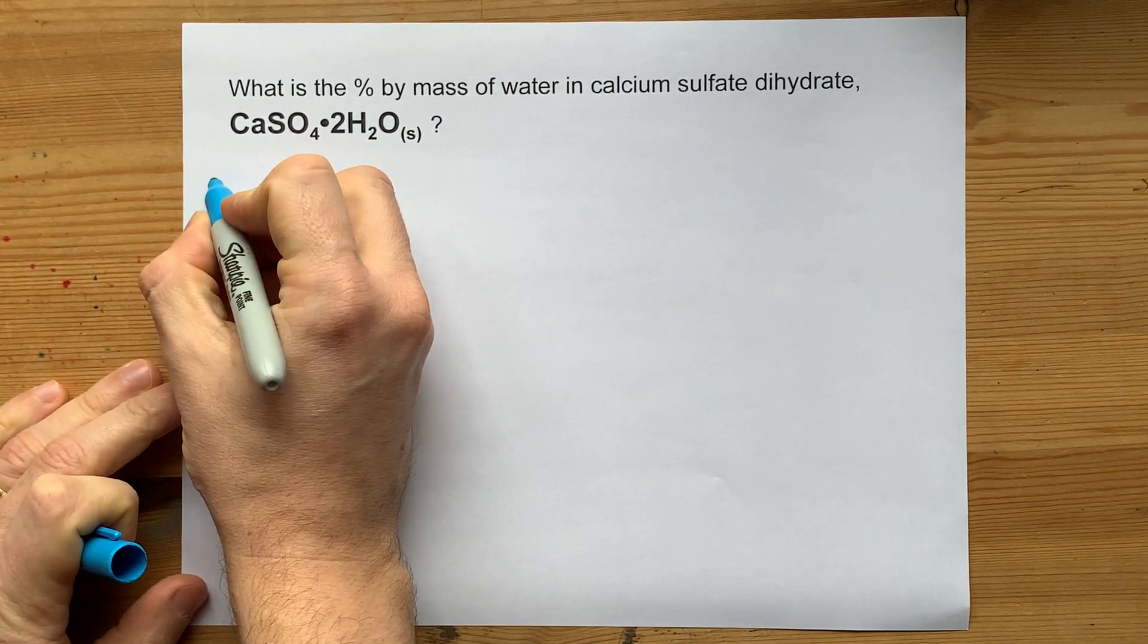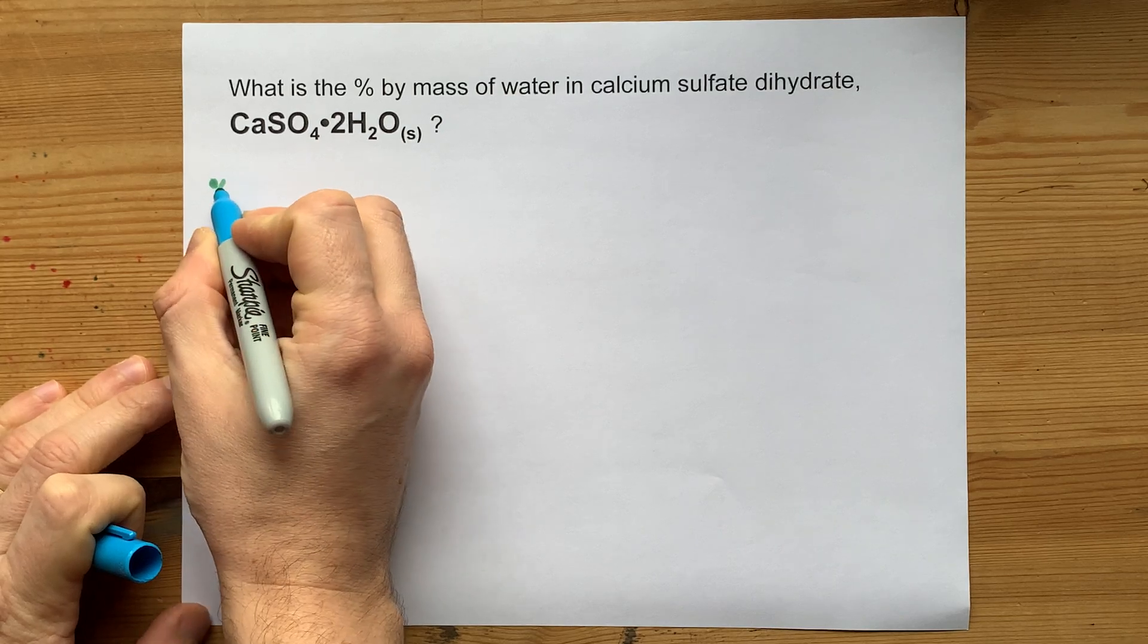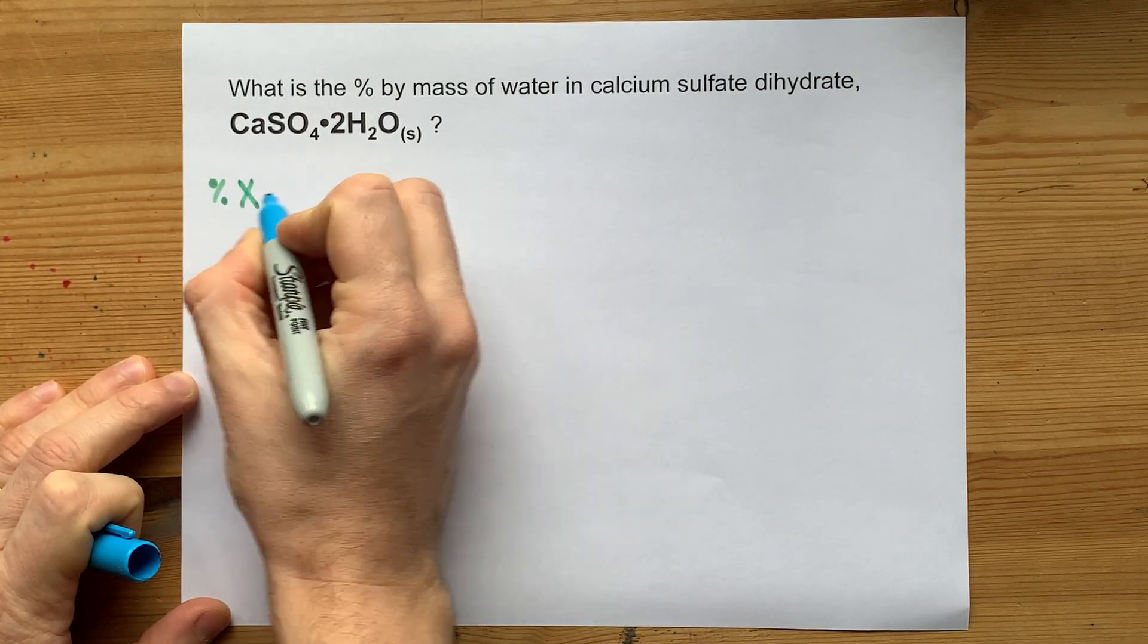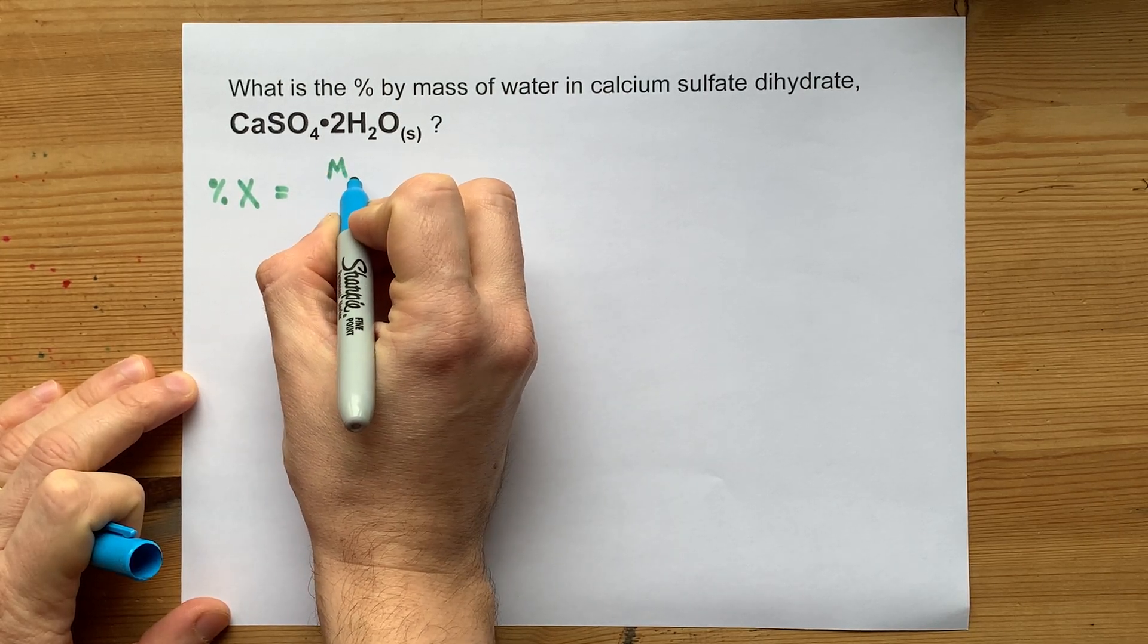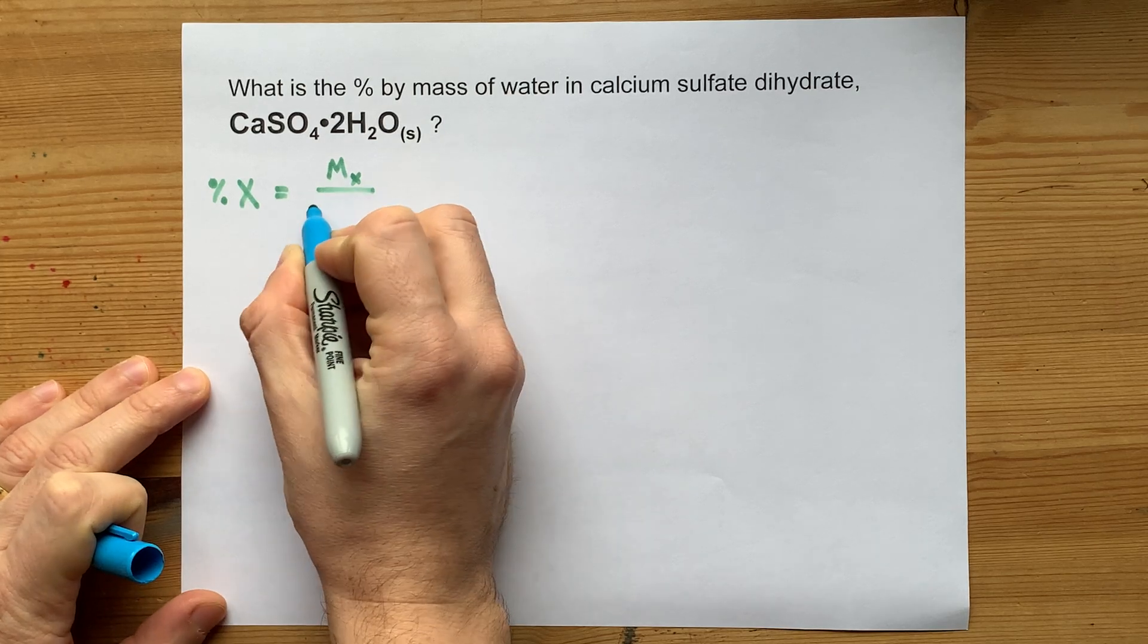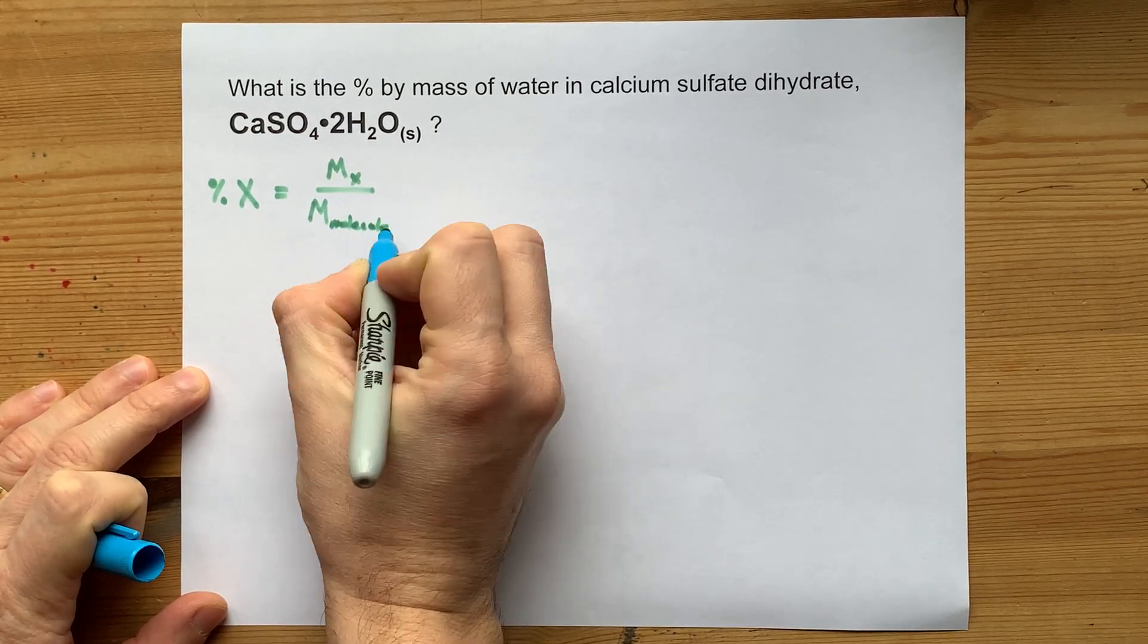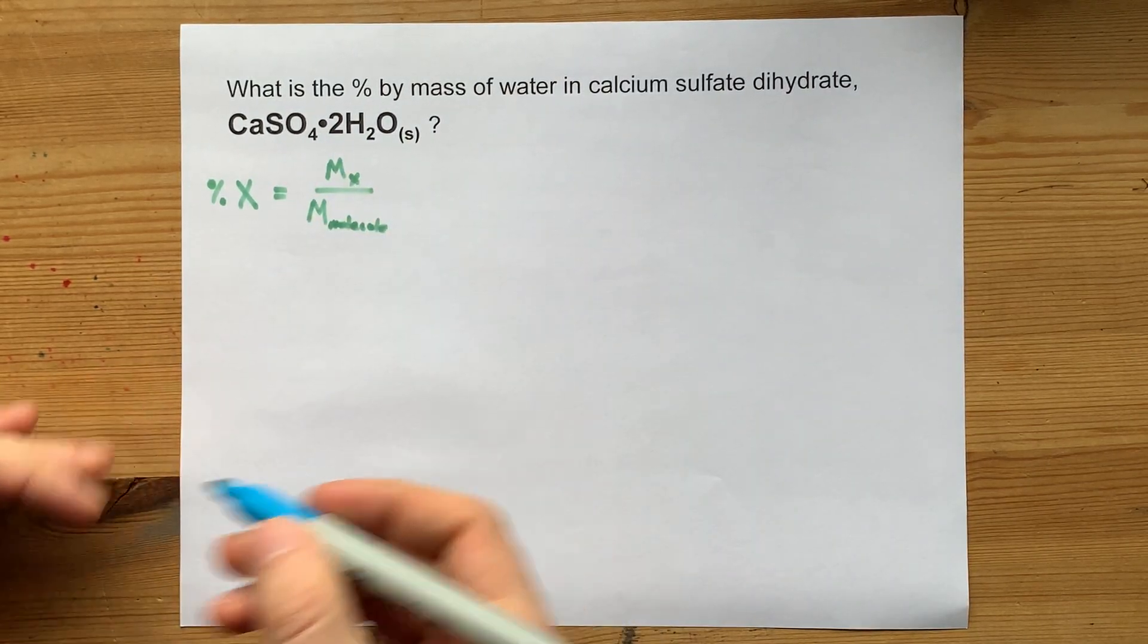Well, this is just like a percent composition question, where you can find the percent of the molecule's mass that is contributed by X, by finding the molar mass contribution of that X divided by the molar mass of the entire molecule. And here, the whole molecule is the calcium sulfate and two extra water molecules.